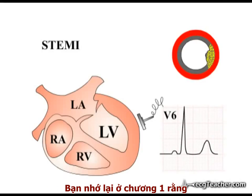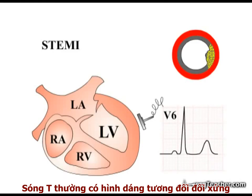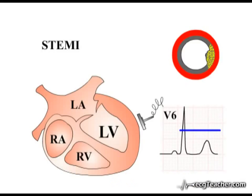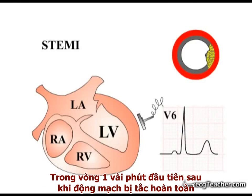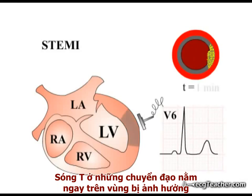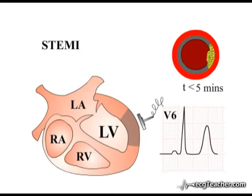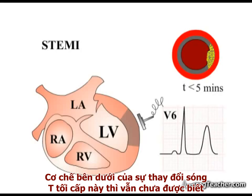You will remember from section 1 that normal T waves tend to be slightly asymmetrical in shape and less than 50% of the height of the preceding R wave. Within the first few minutes of complete vessel occlusion, T waves in the leads overlying the affected area rise in amplitude. The mechanism underlying these hyperacute T wave changes is unknown.